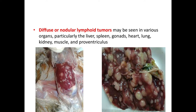Diffuse or nodular lymphoid tumors may be seen in various organs, particularly the liver, spleen, gonads, heart, lung, kidney, muscle, and proventriculus. In this picture you can see nodular lymphoid tumors in the liver.